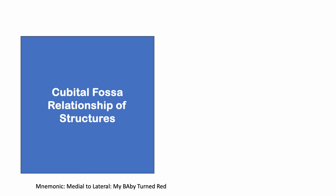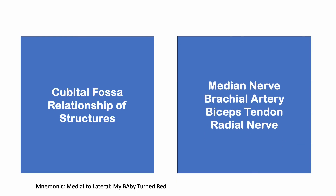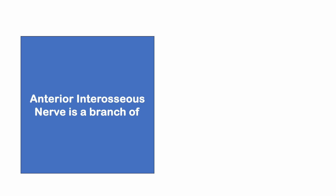Cubital fossa — the relationship of structures from medial to lateral. The mnemonic is 'my baby turned red': median nerve, brachial artery, biceps tendon, and radial nerve.